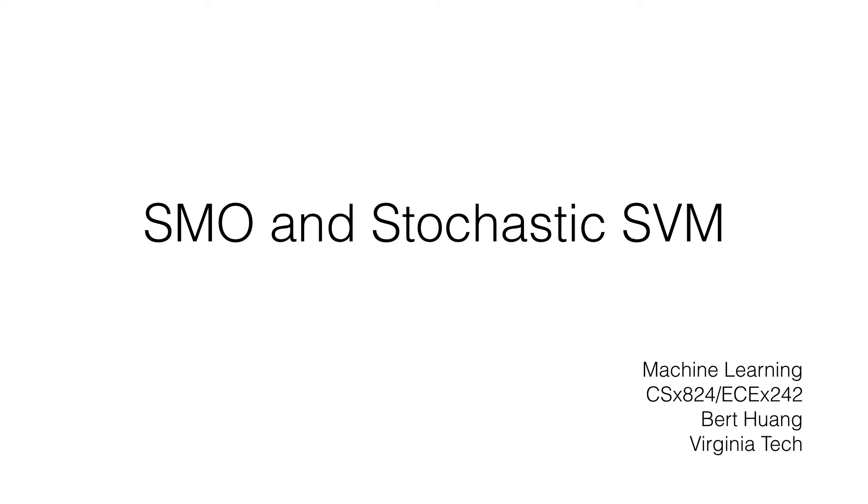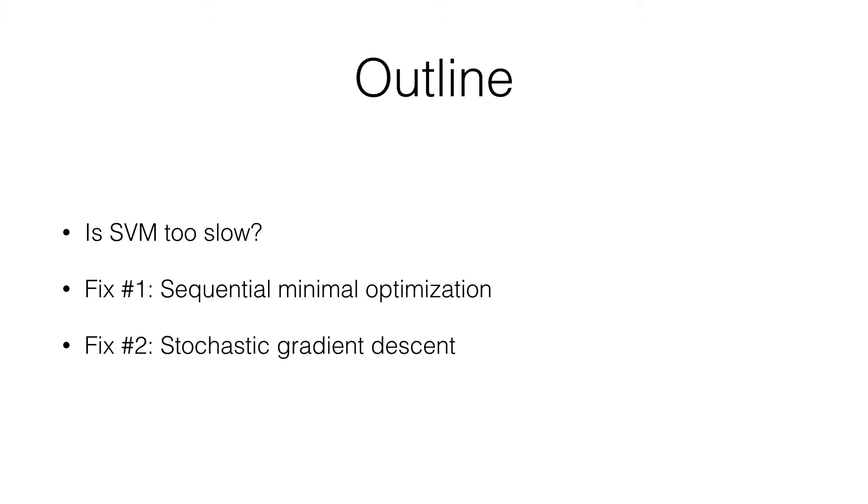Okay, so this is going to be a quick video on different variants of the optimization procedure for support vector machines. We're going to try to get around the problem of SVM being relatively slow compared to what we really want out of an algorithm that can handle large data scales. So here's the plan. We'll ask ourselves if SVM is too slow for the large-scale data problems we're going to be dealing with in the modern era. And then I'll talk about two fixes for helping to make it faster. The first is called sequential minimal optimization, and the second will just be stochastic gradient descent, which we've already seen before, but I'll show you how to do it for the SVM objective function.